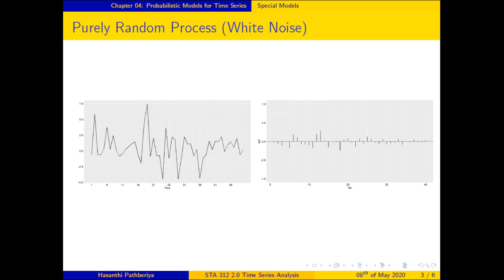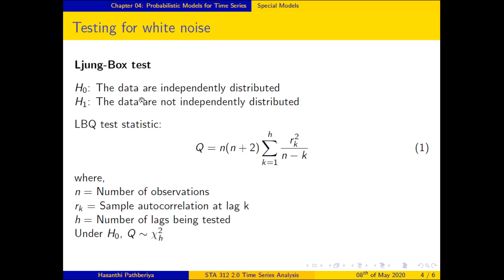You can use the time series plot or the ACF to detect the white noise property for a given time series. In addition, there is a statistical test available — the Ljung-Box test. In this test, the null hypothesis H₀ is that the data are independently distributed, and the alternative is that they are not independently distributed.